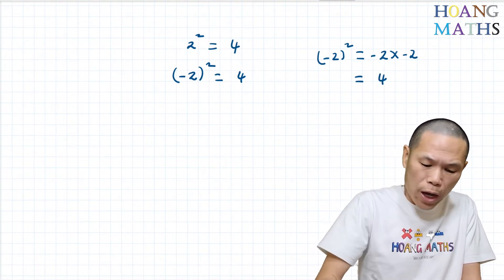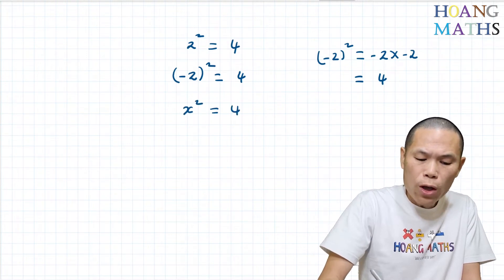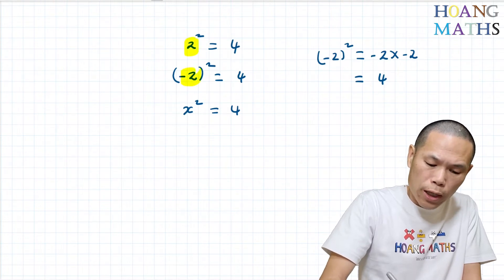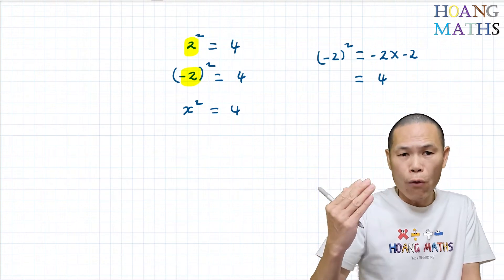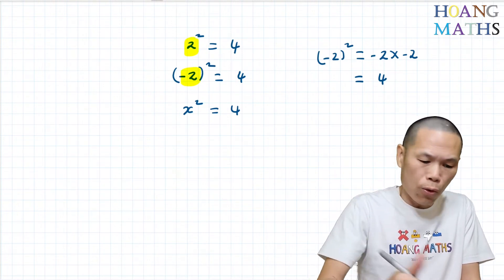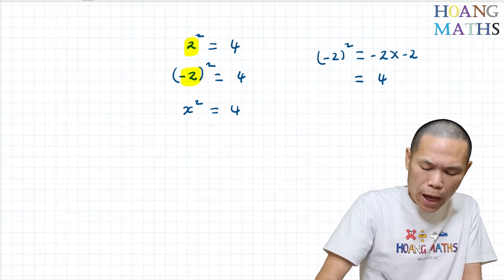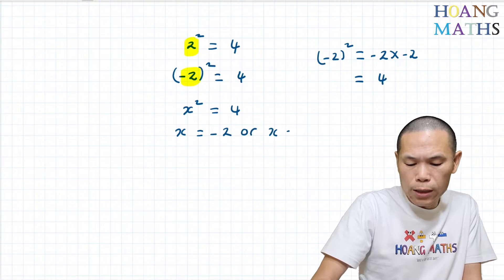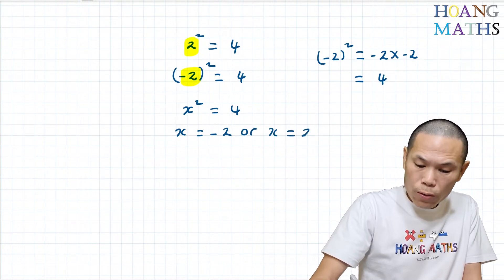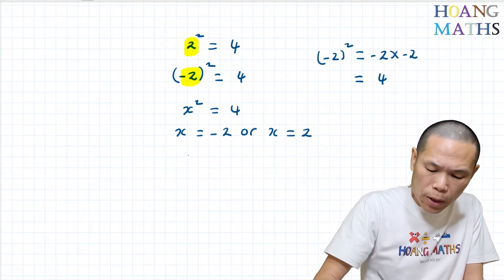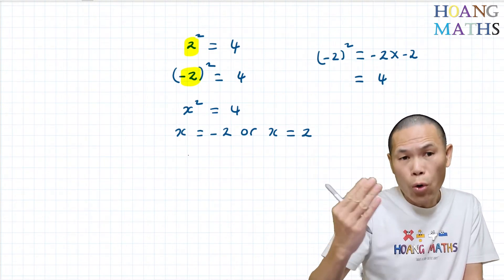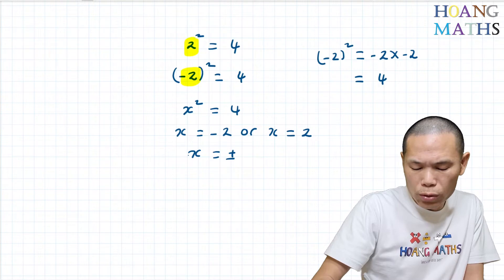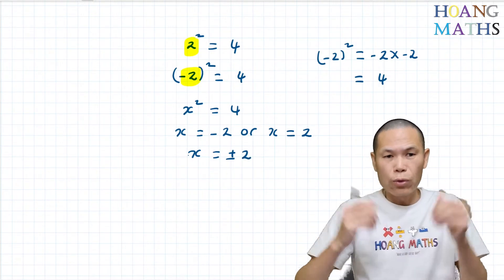So if we have a number squared — that is x squared is equal to 4 — this means that x is either equal to 2 or negative 2. Because negative 2 squared gives me 4, and 2 squared also gives me 4. So the answer is x equals negative 2 or x equals 2. Or we can write x equals plus or minus 2.